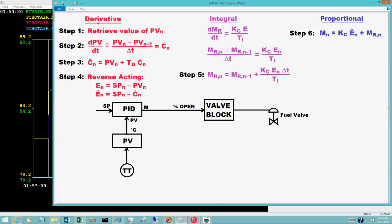The control calculations proceed as a sequence of steps. Starting with derivative, then integral, and finally proportional. Step 1 retrieves the current value for the input configured for the PV to obtain PV sub n. The value of the PV from the previous execution is PV sub n minus 1.